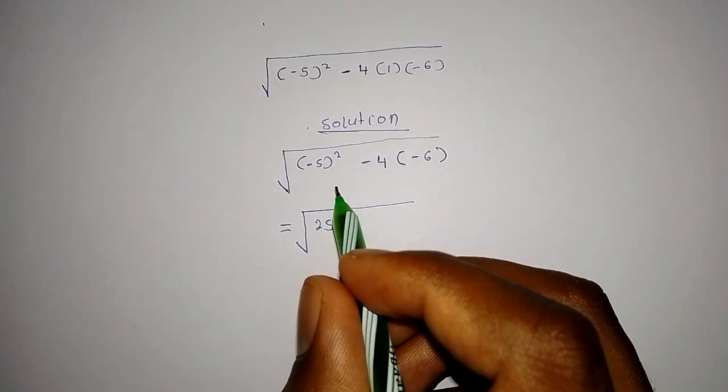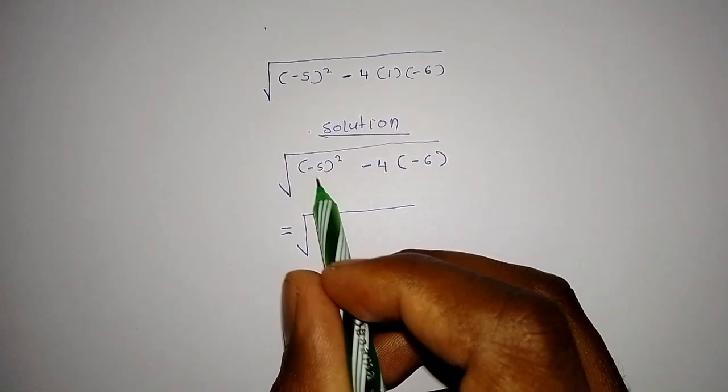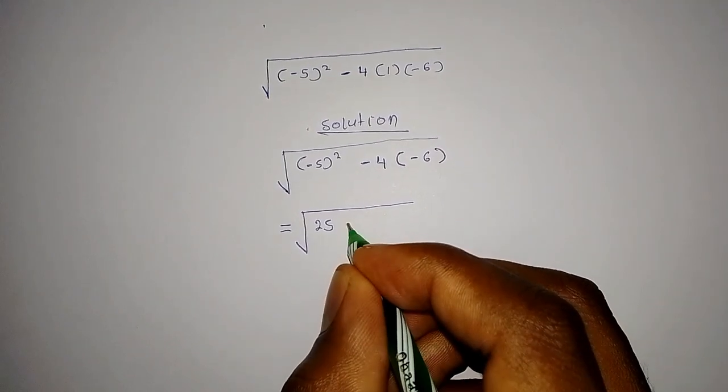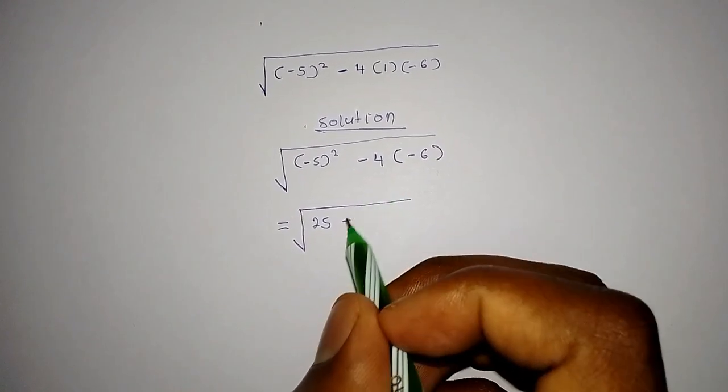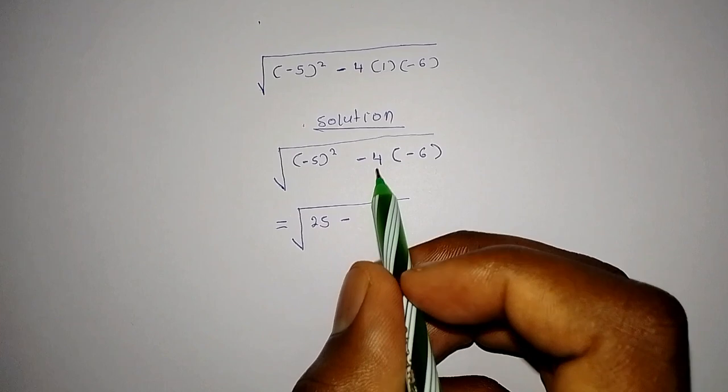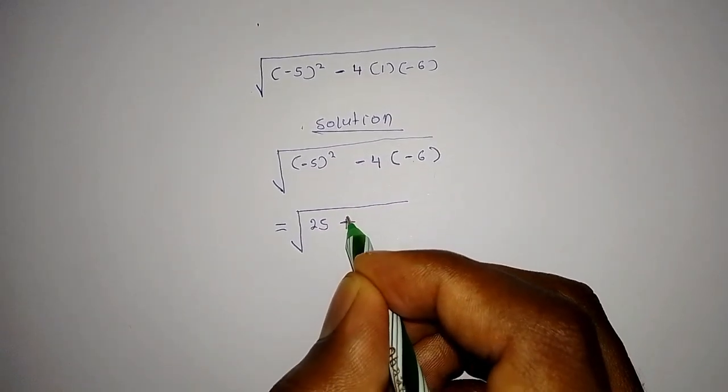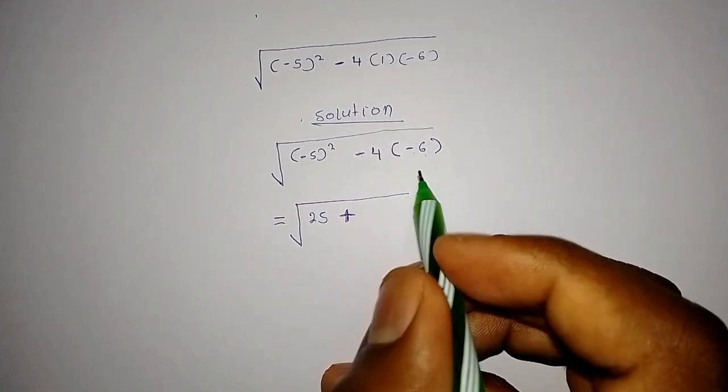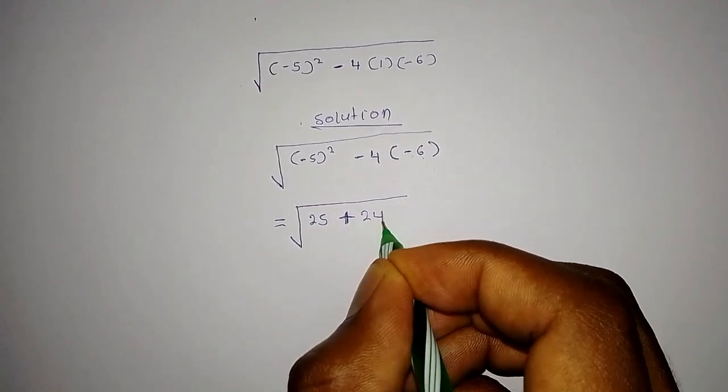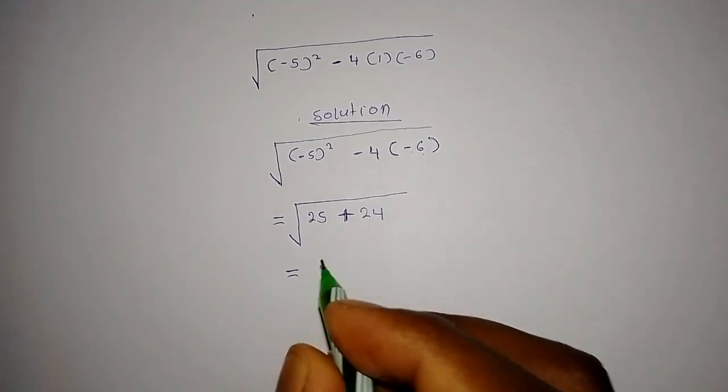Because the square of a negative sign becomes a positive. Then we multiply - that will be plus because a negative multiply by a negative gives us a positive sign. 4 by 6 will give us 24.